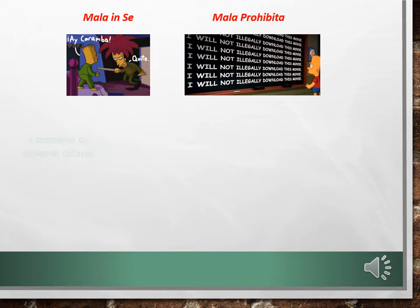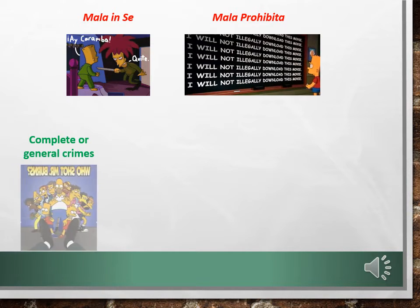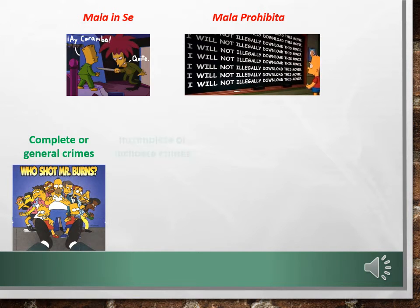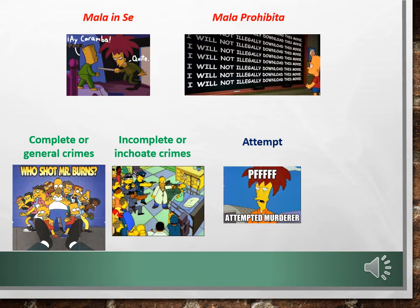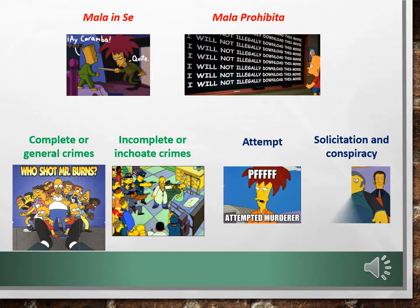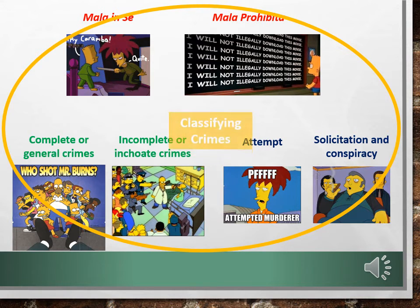For example, you learned about complete or general crimes — these are specific bad acts prohibited by society — vs. incomplete or inchoate crimes, which are general bad acts that lead to the commission of complete or general crimes. We then broke down inchoate or incomplete crimes further into attempt — what happens when you try to complete a general crime — and solicitation and conspiracy — what happens when you work with other people to try to complete a general crime. So all of this is about classifying crimes, but there are other ways in which we classify crime as well, and that's what we're going to talk about today.